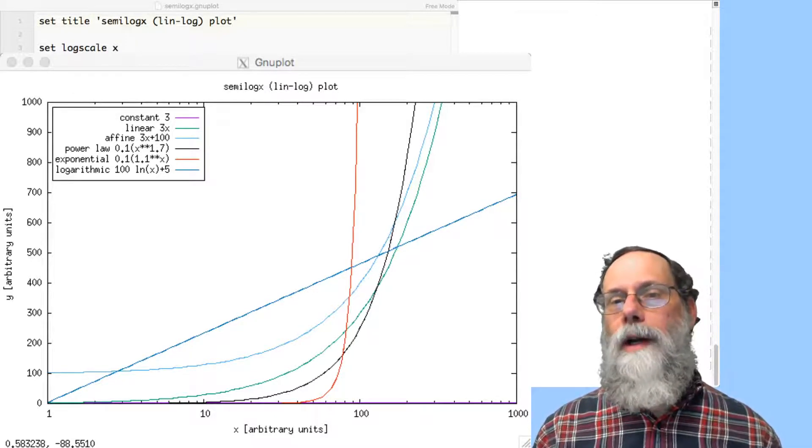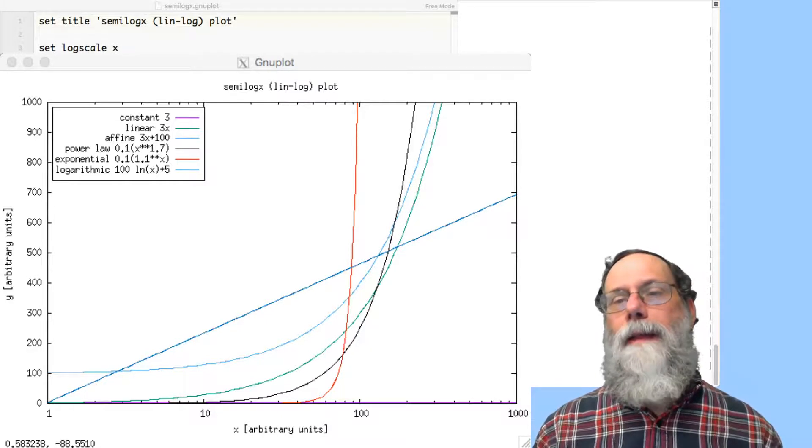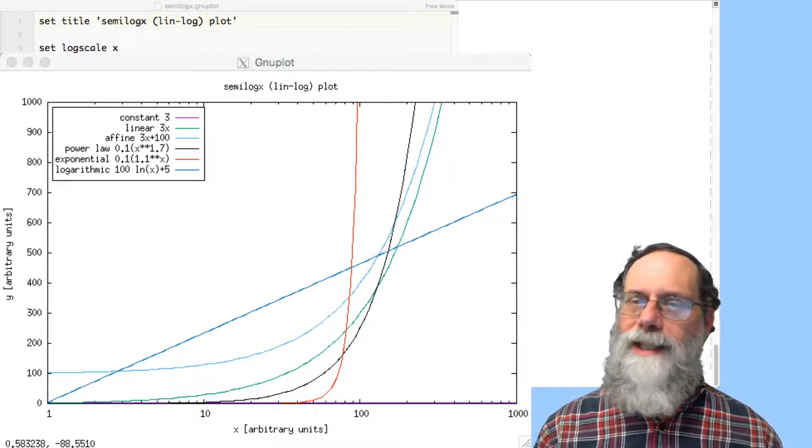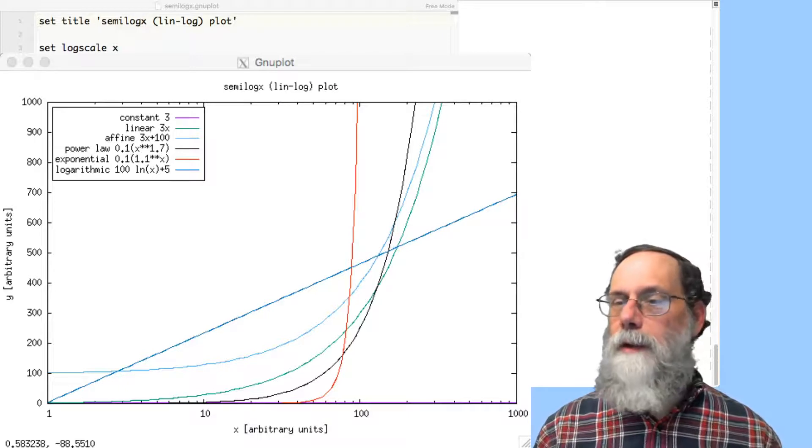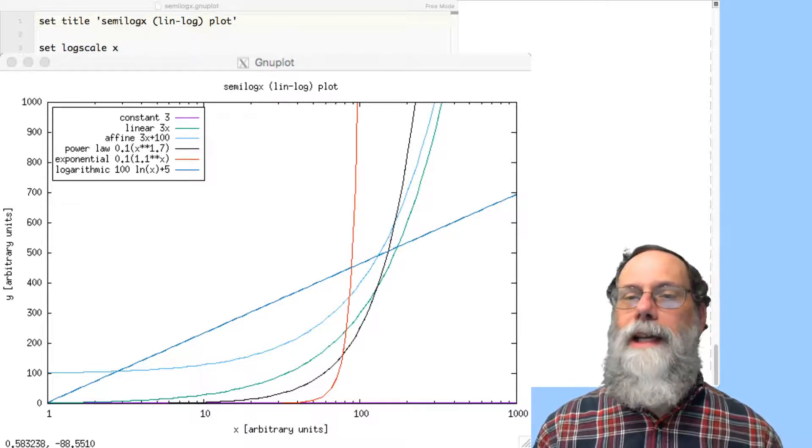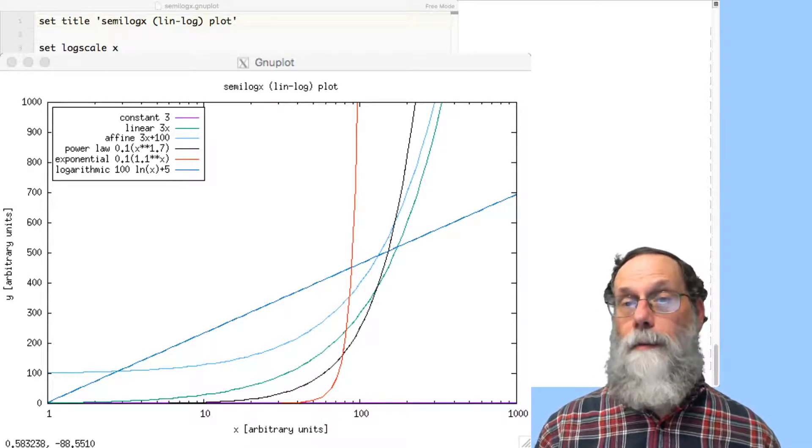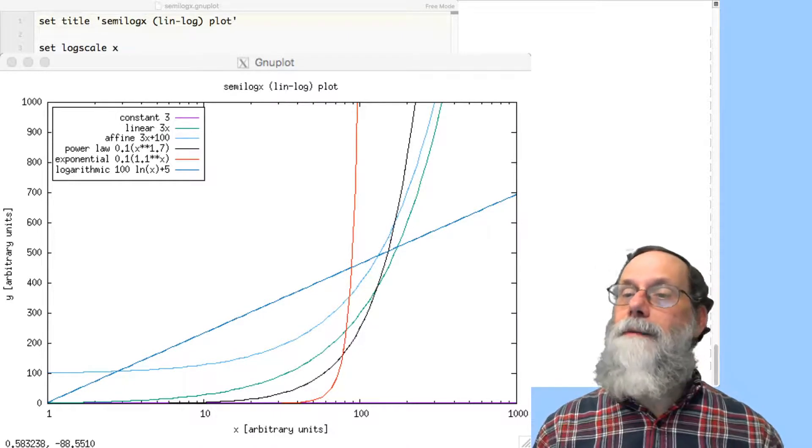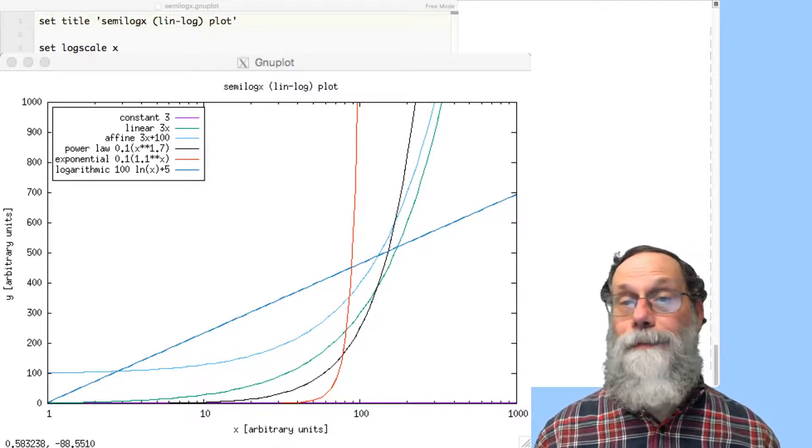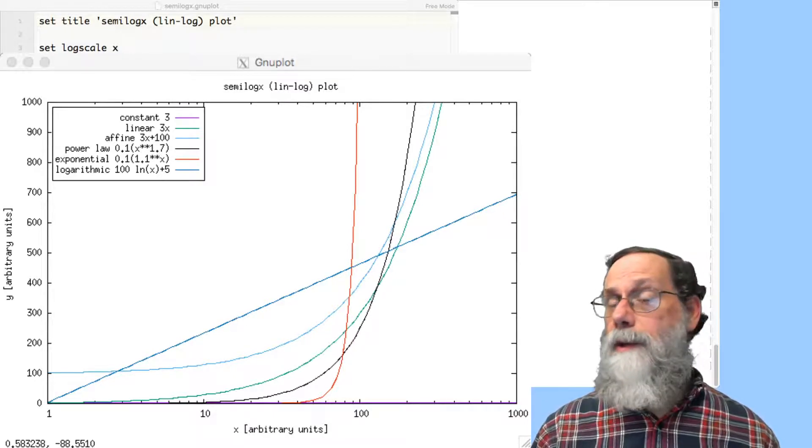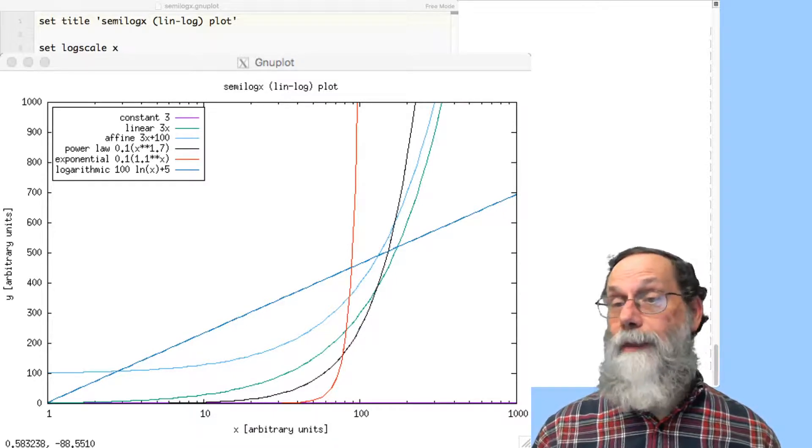Now the 100 times the natural log of x, that can be represented in various different ways. That multiplying by 100 is simply changing the base of the logarithm. The plus 5 is moving the whole thing up and down. None of the other ones look straight at all. They all look like curves.